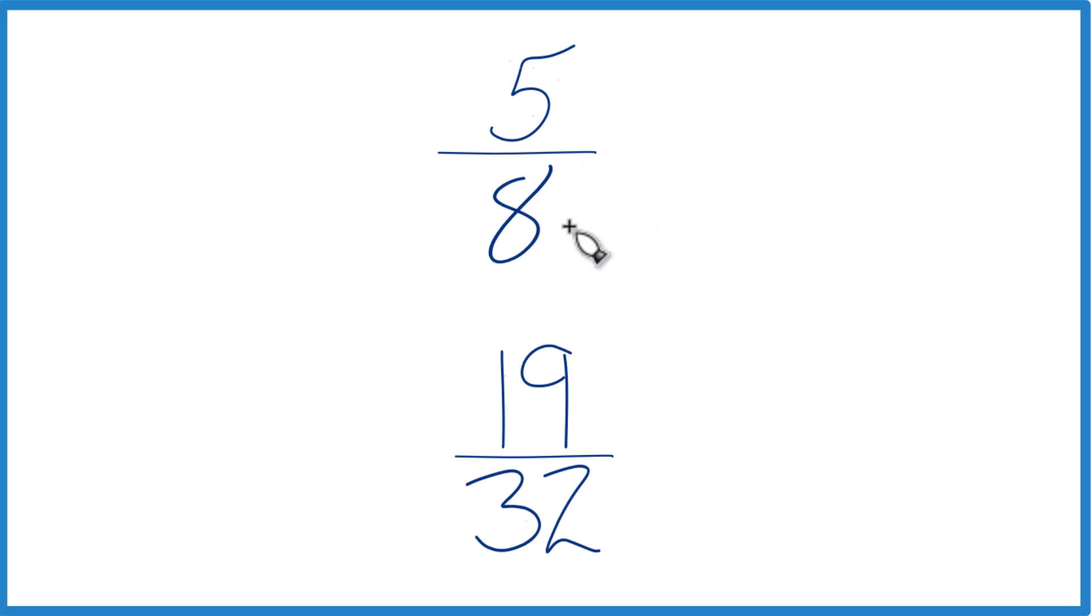Another way to do it is to find a common factor, something that 8 and 32 go into evenly. Because if we can get the denominator to be the same, we can just compare the numerators and figure out whether 5 eighths is greater than or less than 19 32nds.